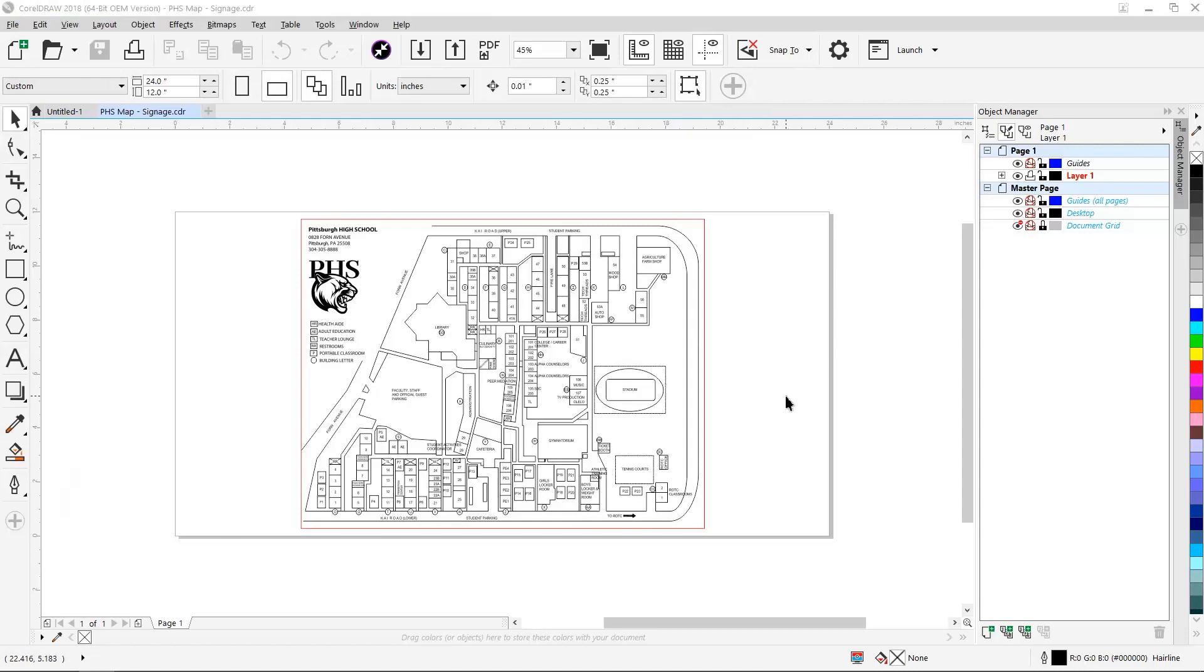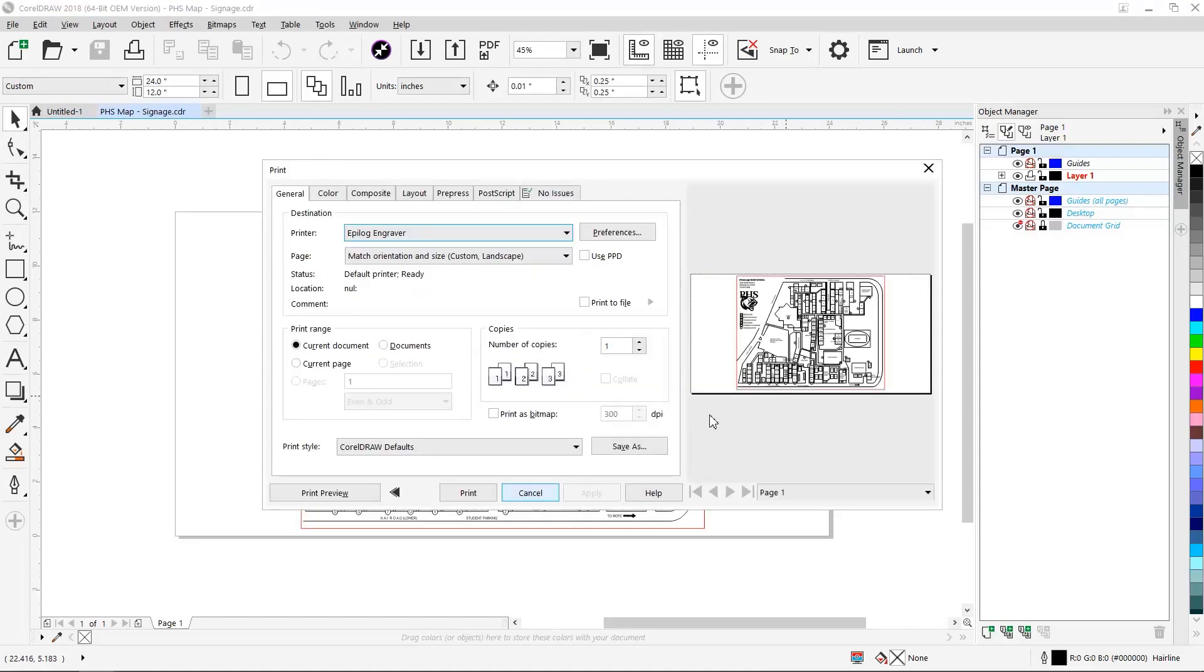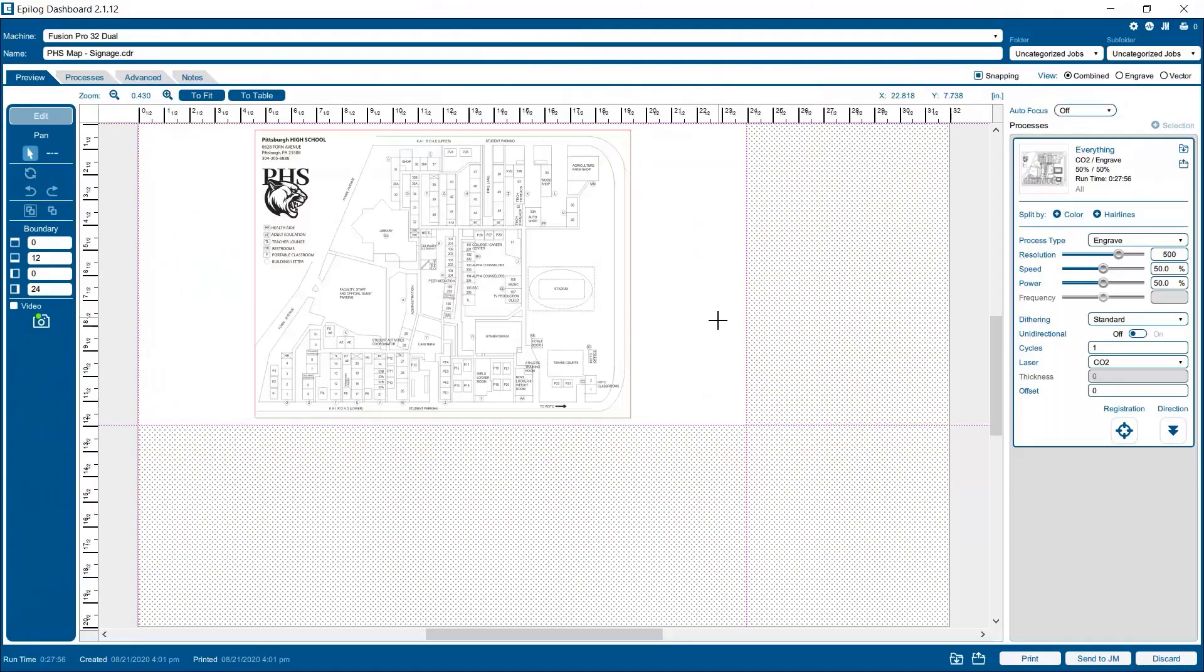That's all the prep we need to do so we're good to print our artwork over to the Epilogue engraver. This opens up the Epilogue dashboard where we can configure our engraving and cutting settings. To start everything is under a single process.